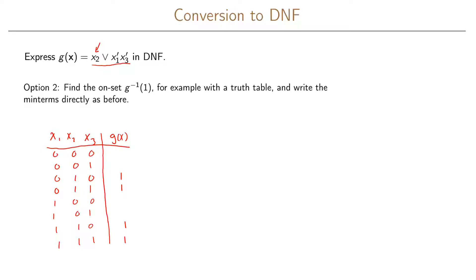We immediately write 1 for all rows where x2 is 1. The other possibility for a 1 is when x1 is 0 and x3 is 0. One of those rows is already filled as 1 because x2 is 1 there. The rest we fill out as zeros. The truth table gives us our minterms directly: m0, m2, m3, m6, and m7.